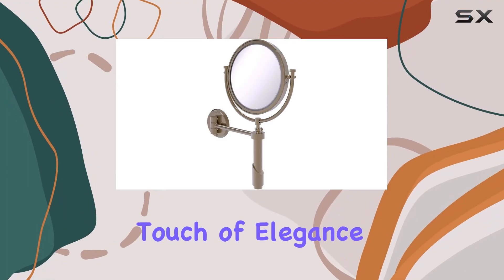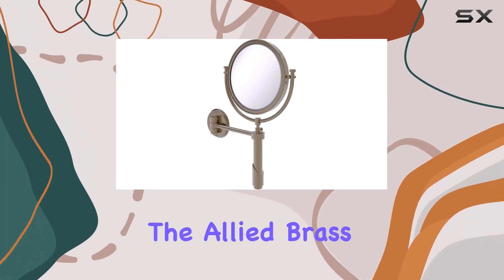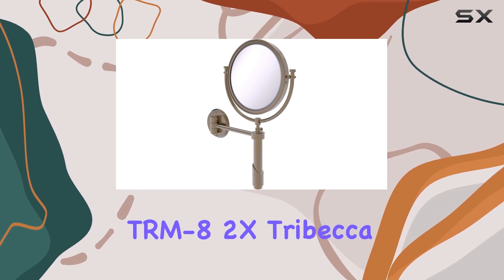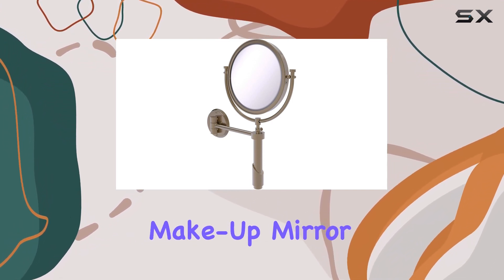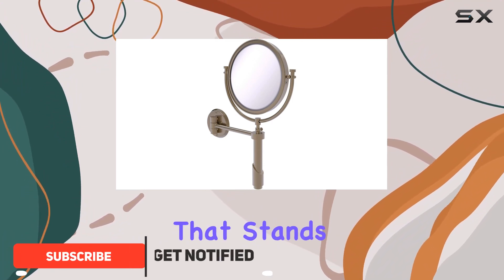When it comes to adding a touch of elegance and functionality to your bathroom, the Allied Brass TRMA 2X Tribeca Collection wall-mounted 8-inch diameter with 2X magnification makeup mirror in antique pewter is a choice that stands out.